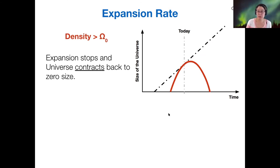And now let's consider what happens when we have more than the critical density. So more than the critical density means we have lots of gravity pulling strongly in against expansion. And so because of that high mass density, high energy density, the expansion eventually stops and the universe contracts back to a zero size.